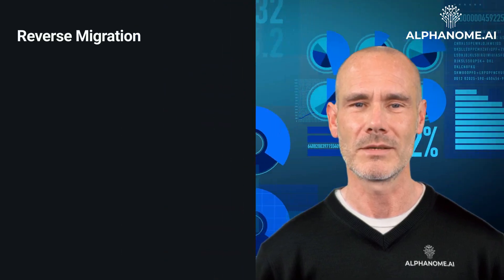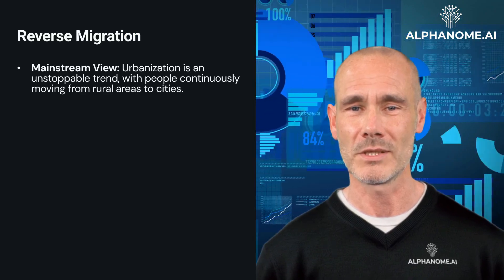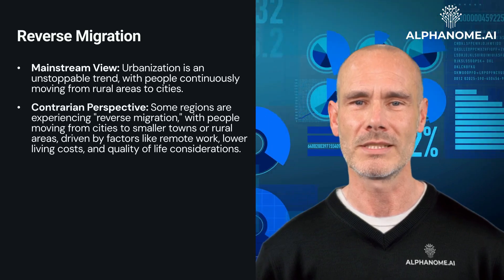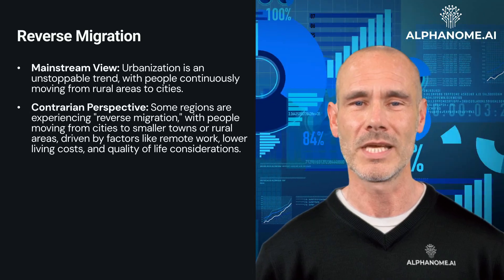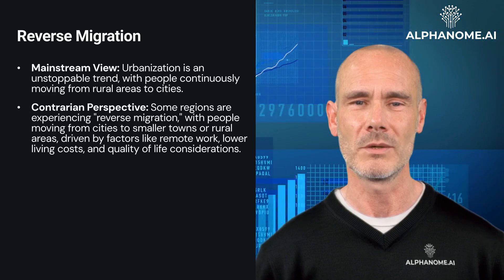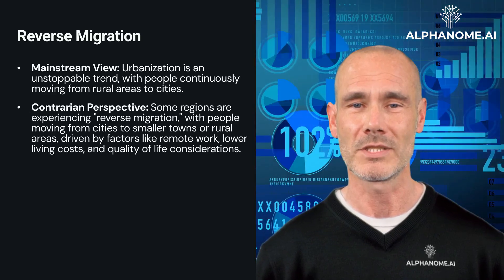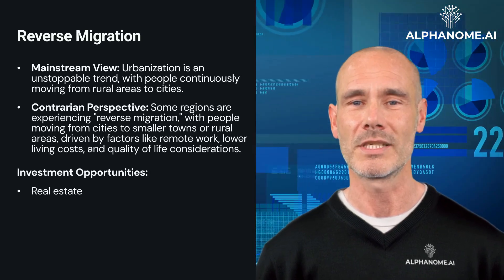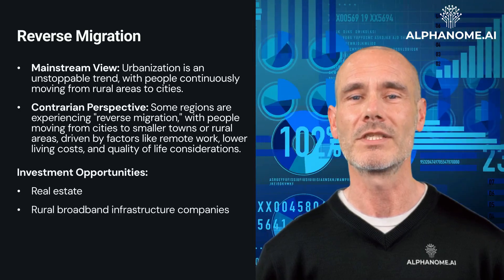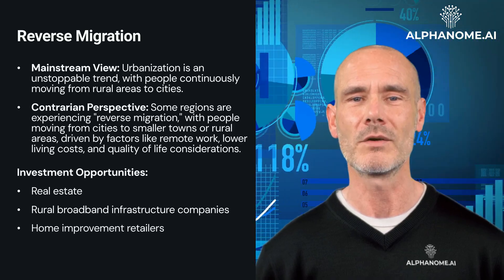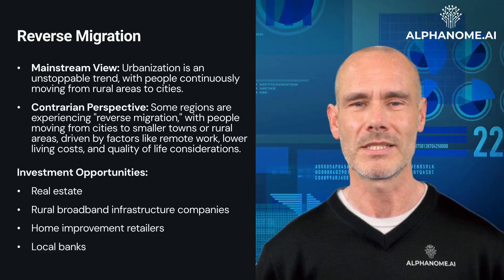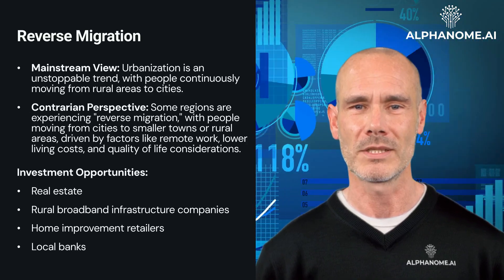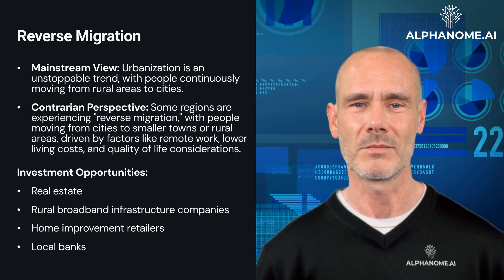Reverse Migration. Mainstream view: urbanization is an unstoppable trend, with people continuously moving from rural areas to cities. Contrarian perspective: some regions are experiencing reverse migration, with people moving from cities to smaller towns or rural areas, driven by factors like remote work, lower living costs, and quality-of-life considerations. Investment opportunities include real estate in emerging 'Zoom Towns' and smaller cities attracting remote workers, rural broadband infrastructure companies, home improvement retailers in growing small towns, and local banks in areas experiencing population growth. Example: investing in regional banks like Pinnacle Financial Partners, which operates in growing Southeastern U.S. markets benefiting from reverse migration.